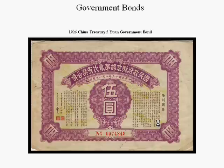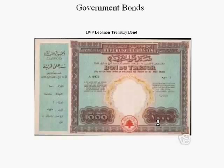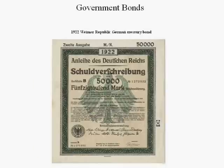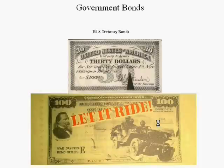Government bonds have been issued by governments for a long time. Here's an example of a 1926 China Treasury bond, a 1949 Lebanon bond, a 1952 USSR bond, a 1922 Weimar Republic German bond, and two examples of USA Treasury bonds — the top one is a Civil War bond and the bottom one is a World War II bond.